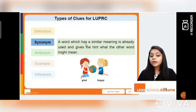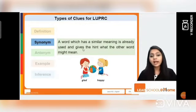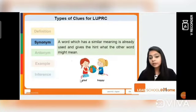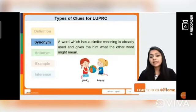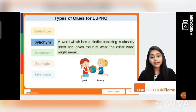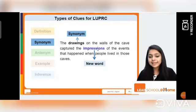The next clue type is a synonym, where a word with a similar meaning is already used and gives a hint about what the other word might mean. For example, when I say 'I am glad and happy,' both are positive emotions, so I can understand the meaning right there.